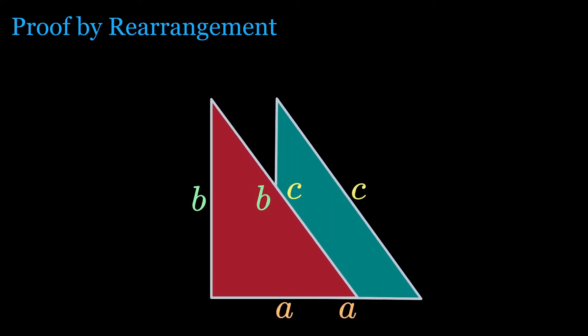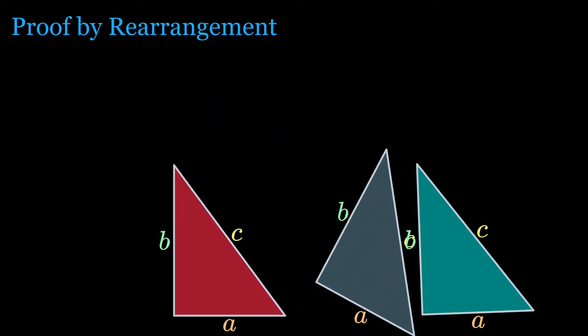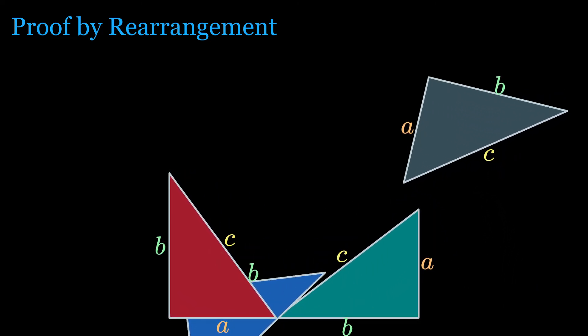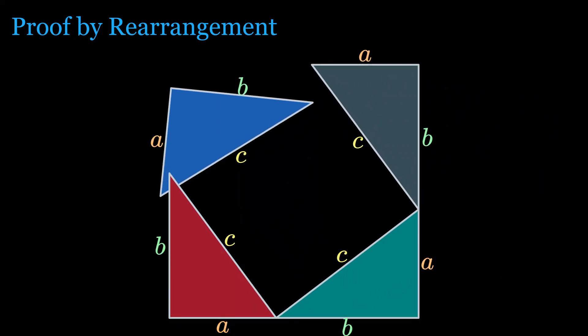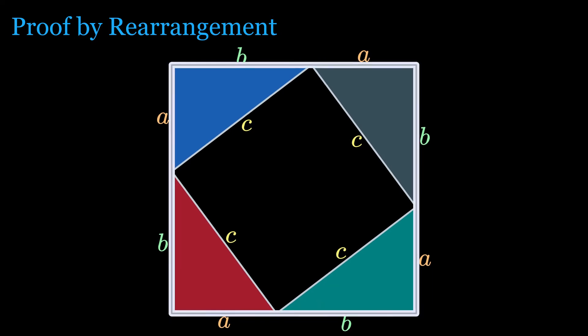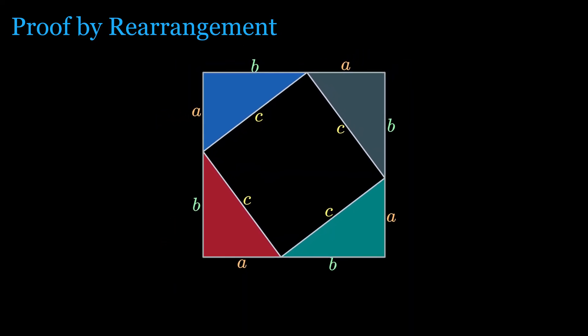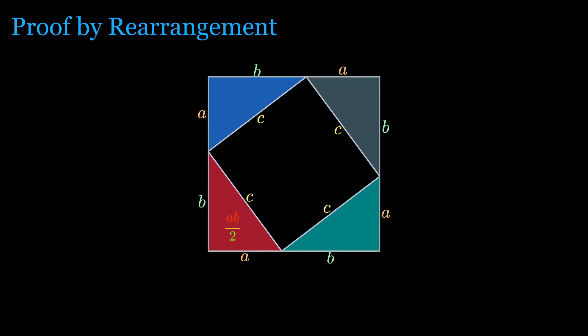Arrange four identical right triangles to make a square like the one shown. The area of the square is equal to the sum of the areas of the four triangles plus the area of the central square whose sides are equal to C.